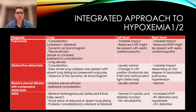Obstructive atelectasis should present with consolidation but no dynamic air bronchogram. It should have no impact on left ventricular function and a variable impact on right ventricular function depending on the degree of associated pulmonary hypertension. ARDS generally presents as bilateral heterogeneously distributed B-lines with skip areas. One can see focal areas of reduced or absent lung sliding, and posterior consolidations either unilateral or bilateral. It generally does not affect left ventricular function but can greatly affect right ventricular function with increased pulmonary vascular resistance and cor pulmonale.